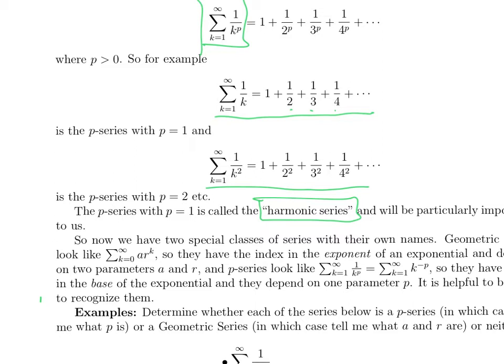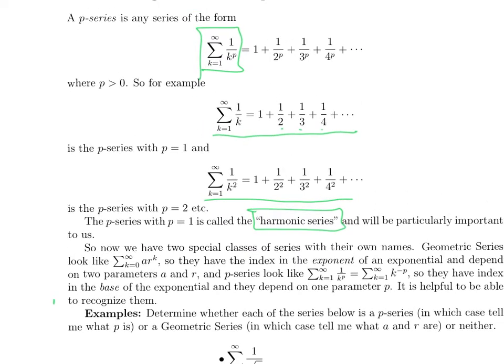So we now have two special series, kind of our fiduciary series that we compare to: the geometric series, which looks like a number raised to the k, so the index appears in the exponent.